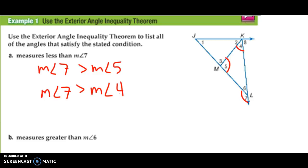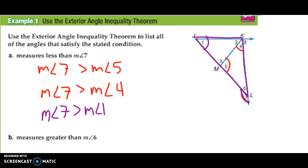We can also see that angle 7 is a remote angle to the larger triangle as well. So angle 1 has to be less than angle 7. And since angle 2 and angle 4 together form that remote angle, and we already know 4 is less than angle 7, it also means the measure of angle 7 is greater than the measure of angle 2. Because of the inequality theorem — if A is greater than B plus C, then A is greater than B and A is greater than C — since 7 is greater than angles 2 and 4 together, it must be greater than each individually.